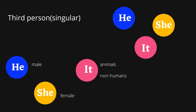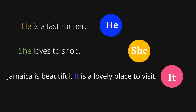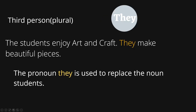Third person singular: he, she, it. We use 'he' to refer to males, 'she' to refer to females, and 'it' to refer to animals and non-humans — you would not use 'it' to refer to a girl or a boy. Examples: 'He is a fast runner.' 'She loves to shop.' 'Jamaica is beautiful. It is a lovely place to visit.' Third person plural would be 'they.' 'The students enjoy art and craft. They make beautiful pieces.' The pronoun 'they' is used to replace the noun 'students'.